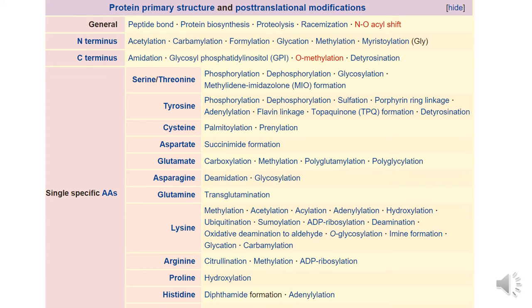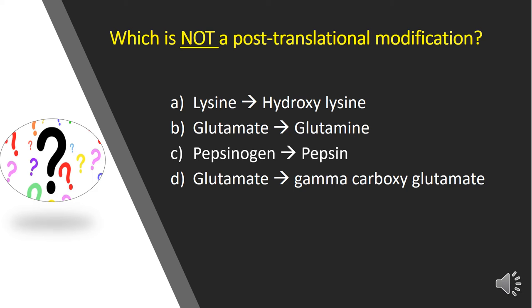Thanks to Wikipedia. You can see the list of post-translational modifications here. Proteolysis is one of the post-translational modifications. Zymogens are activated to active enzymes by proteolysis — prothrombin to thrombin, chymotrypsinogen to chymotrypsin, pepsinogen to pepsin. You can rule out the pepsinogen to pepsin option.